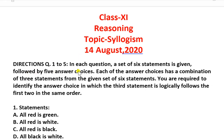These are the directions to solve questions 1 to 5. In each question, a set of 6 statements is given followed by 5 answer choices. Each answer choice has a combination of 3 statements from the given set of 6. You are required to identify the answer choice in which the 3rd statement logically follows the first 2 in the same order.